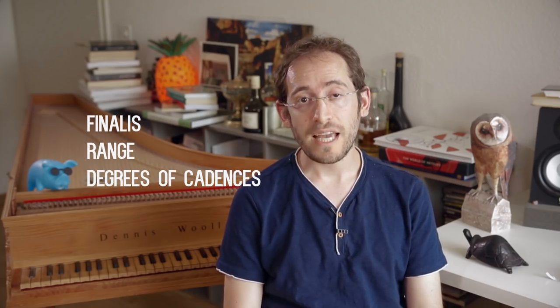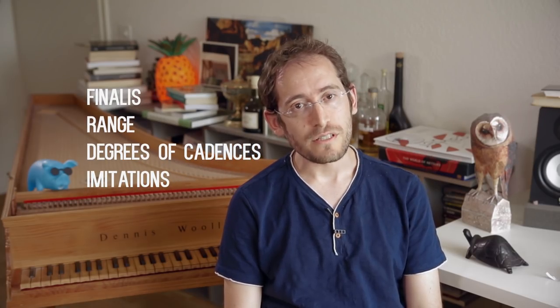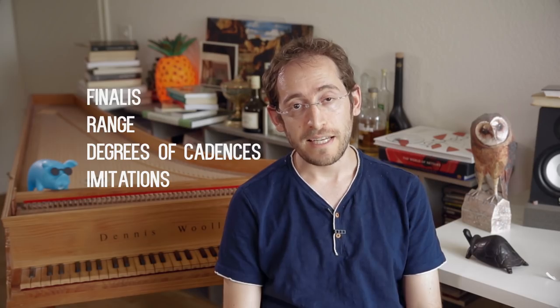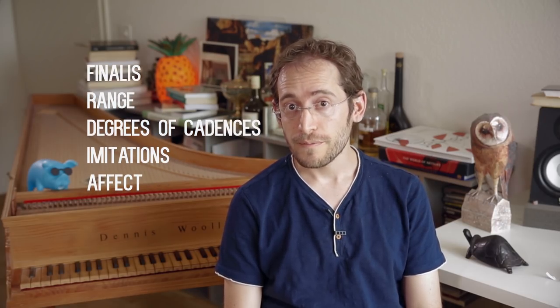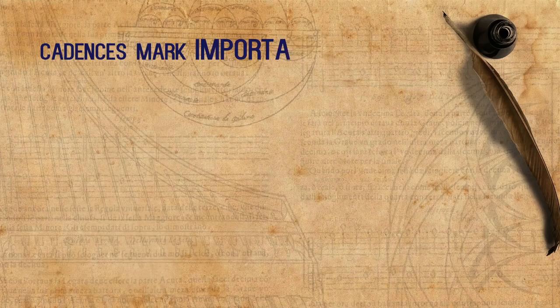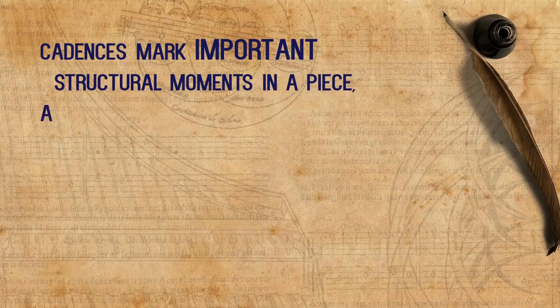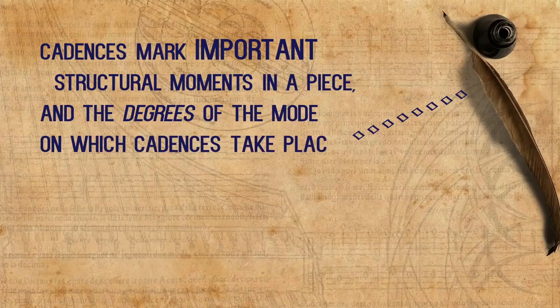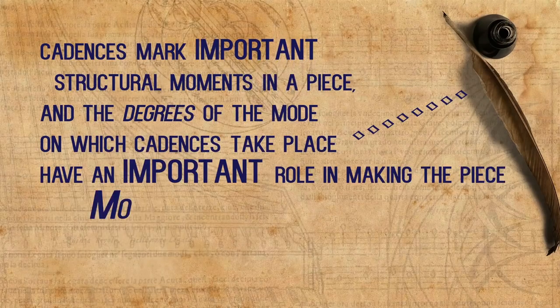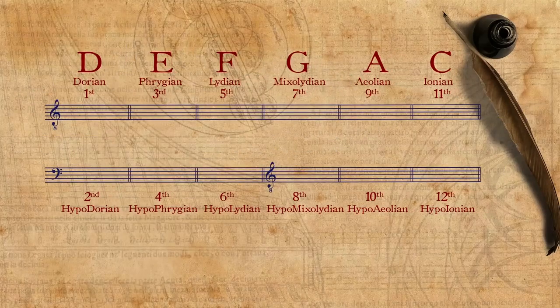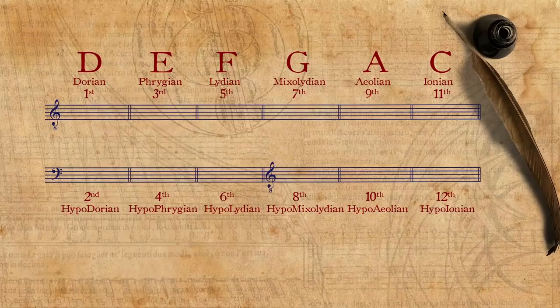We saw that the mode contains the finalis of a piece — what we now call the key of the piece — as well as its general range. Modes may also be manifested by other characteristics, such as the degrees on which cadences will be made, the way imitations or fugal entrances should be composed, and lastly by their effects or ethos. Cadences mark important structural moments in a piece, and the degrees of the mode on which cadences take place have an important role in making the piece modally coherent. For each mode, theorists supplied a list of cadence points according to their importance.